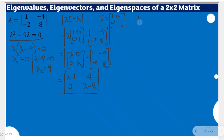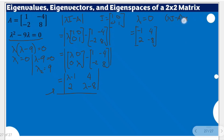Let's start with the first eigenvalue, which is 0. We substitute lambda equals 0 into the matrix, giving us: negative 1, 4, 2, negative 8. This matrix is multiplied by the vector x with components x sub 1 and x sub 2, set equal to the zero vector, giving us 0 and 0.